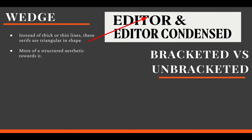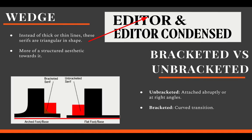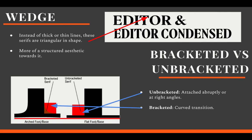Then we have bracketed versus unbracketed. Unbracketed serifs attach directly to the strokes of the letter form, sometimes abruptly or at right angles. Bracketed serifs provide a curved transition between the serif and the main stroke. Through the image, we can identify that the left is bracketed and the transition from the serif to the main stroke is curved. However, on the right, it is attached at right angles, meaning it is unbracketed.